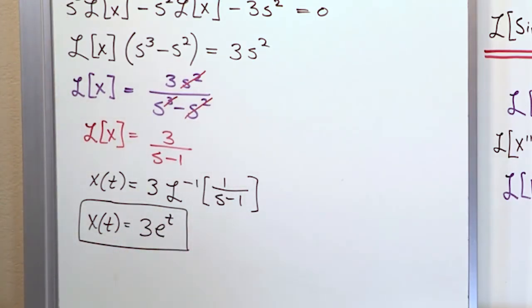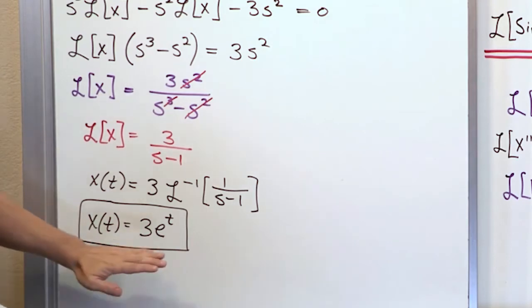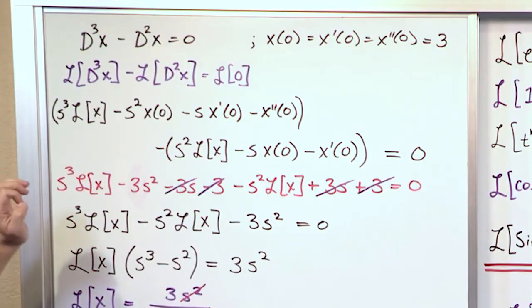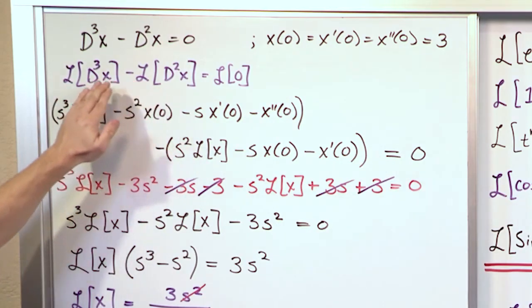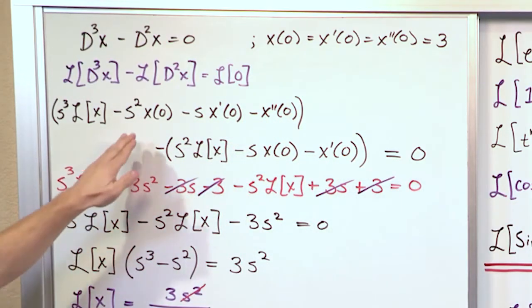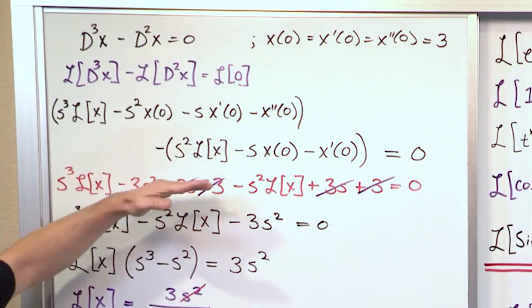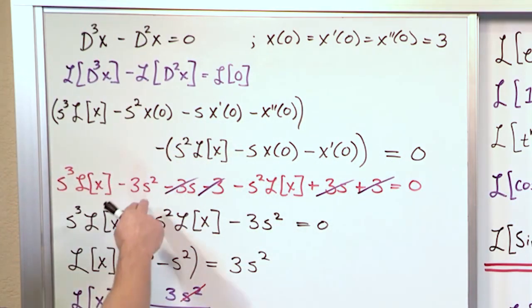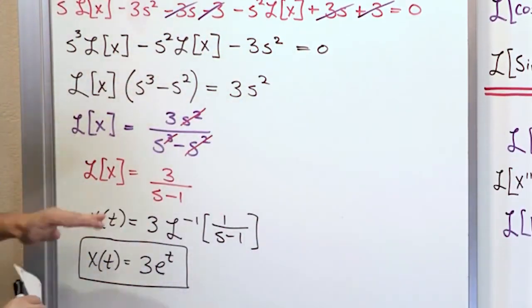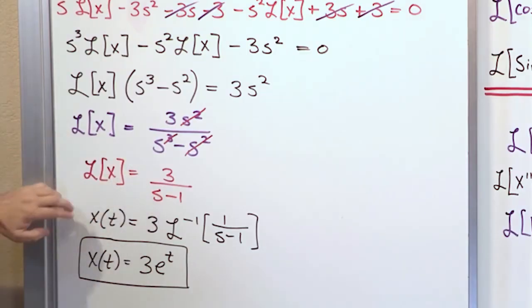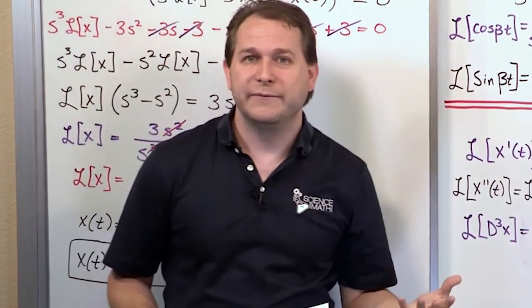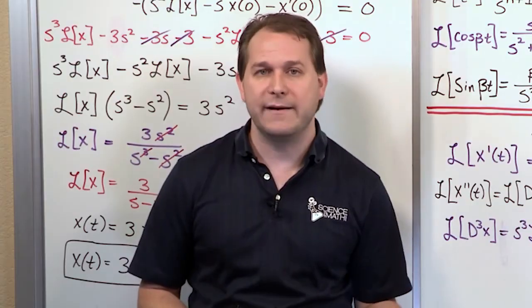So x(t) = 3e^t. Lambda in this case is just 1, so it's e^(λt) = e^(1·t). That's the answer. Notice we got the full answer without having to separately apply initial conditions, because that was already taken care of as part of the solution process. When we applied the Laplace Transform to the derivatives, we substituted initial conditions directly. From that point on, it's basically algebra — cancel S's, collect the Laplace Transform, move all S's to one side, and invert back.